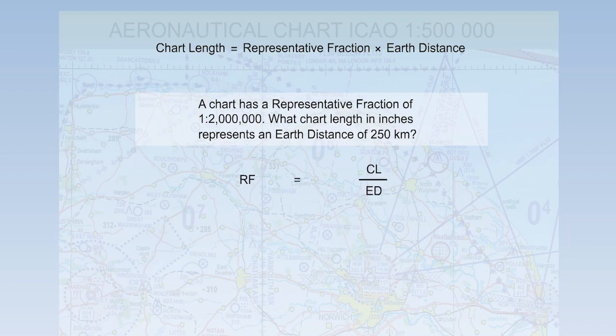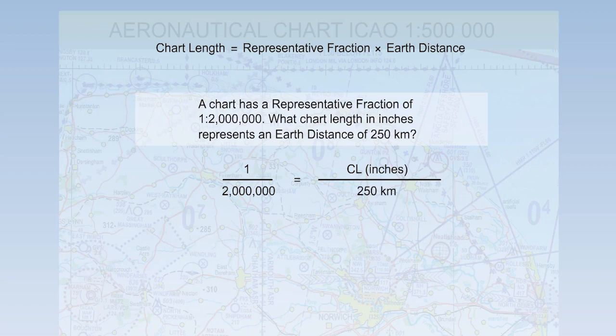As usual, start with the basic equation. Representative fraction equals chart length over earth distance and put in what you know. In this case, the representative fraction of 1 to 2 million and the earth distance of 250 kilometres.